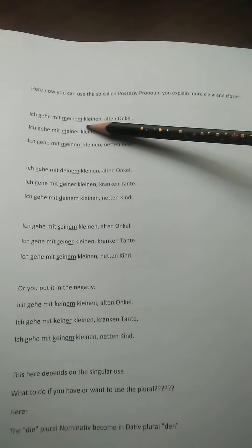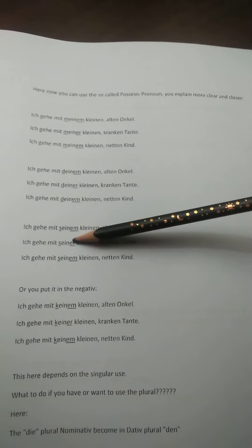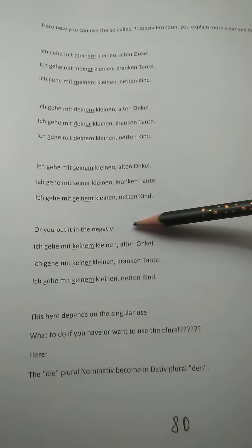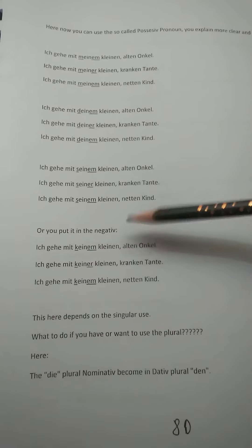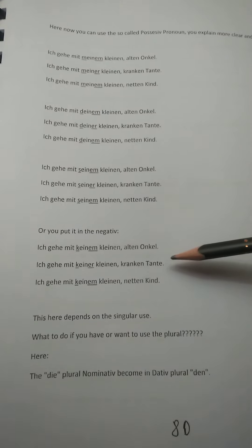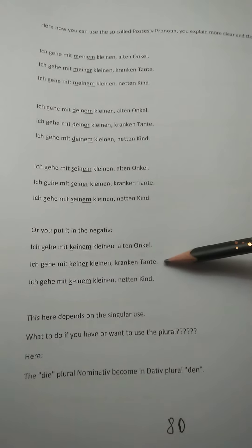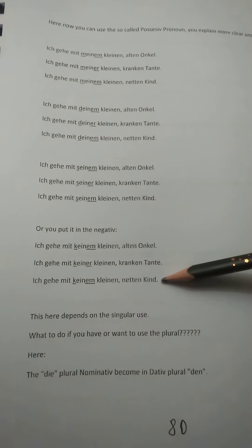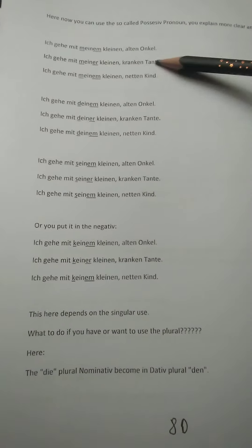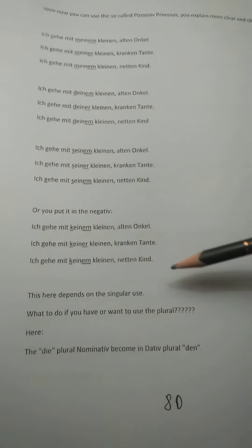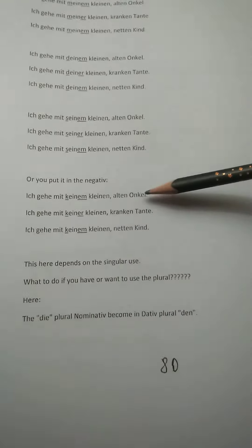So here are the possessives — mein, dein, sein. Now we put this in the negative: ich gehe mit keinem kleinen alten Onkel, ich gehe mit keiner kleinen kranken Tante, ich gehe mit keinem kleinen netten Kind. All of these I use in the singular.